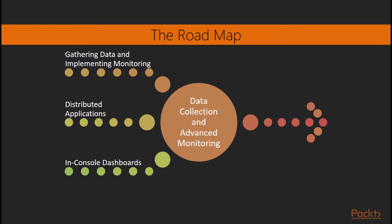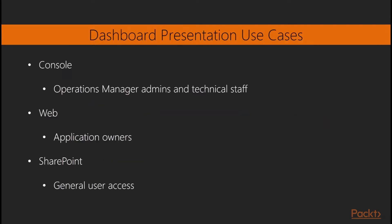Section six is all about dashboards — in-console dashboards in particular. Now that we've gathered the information in section four and built our distributed applications in section five, how do we present that information to end users so they have the assurance that their systems are, A, being monitored, and B, running as expected?